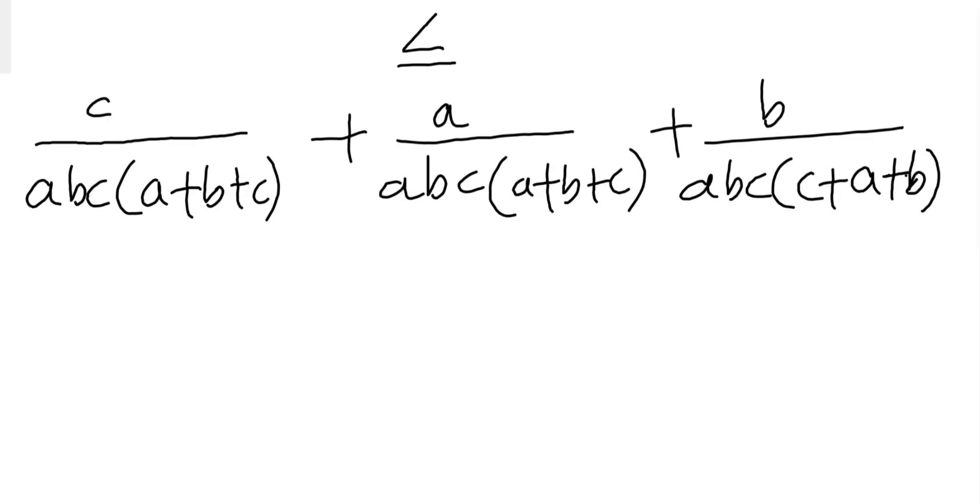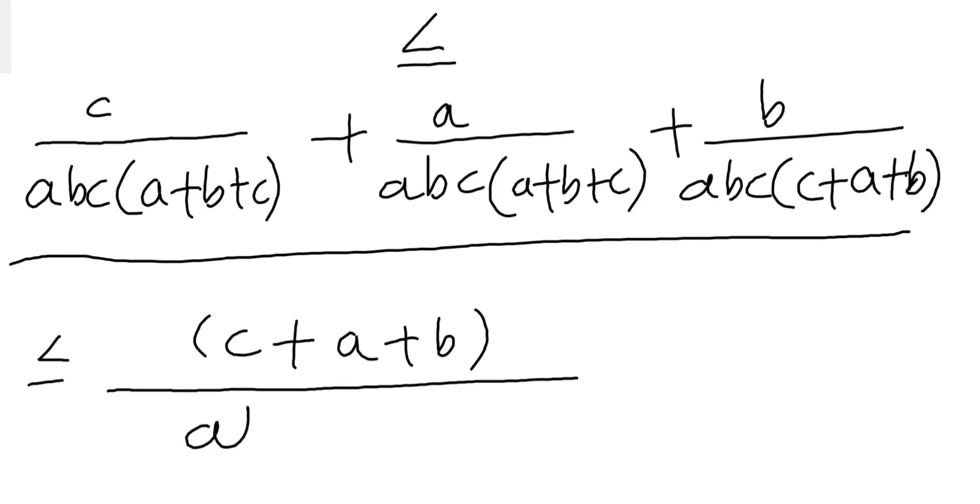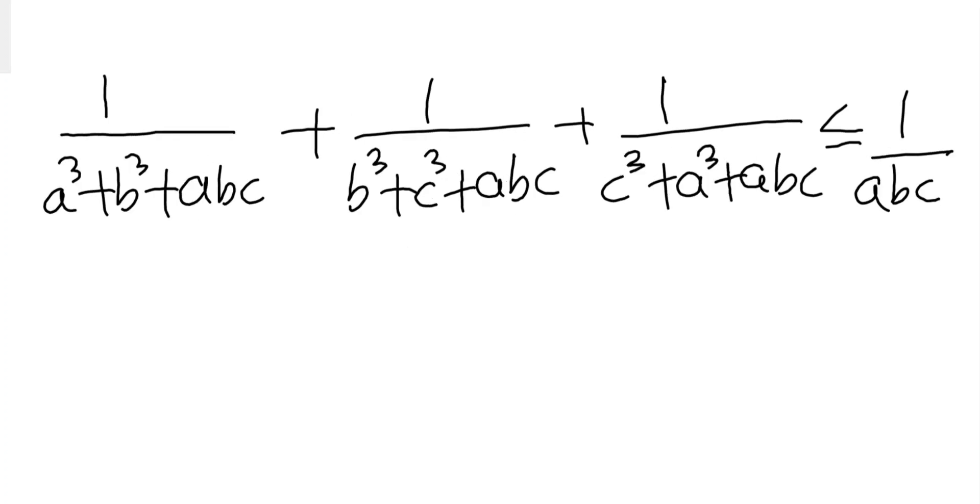So now if I simplify this, what I'll get is less than or equals to (c + a + b)/(abc(a + b + c)), where the numerator is (a + b + c), denominator is the same. We can cancel this and this is 1/abc. So finally this gives us our proof.